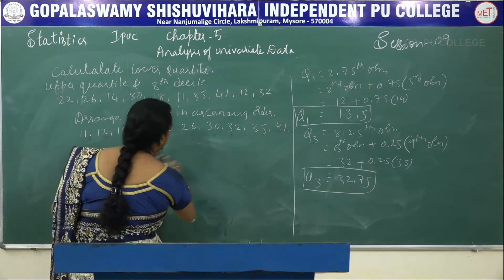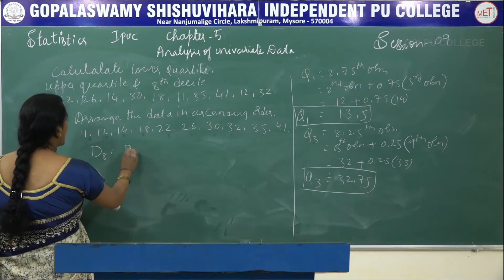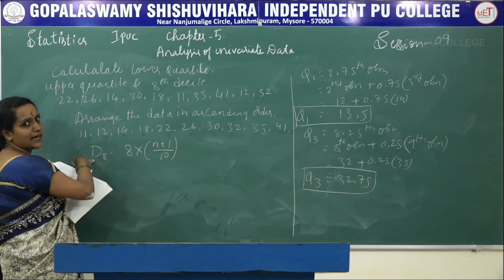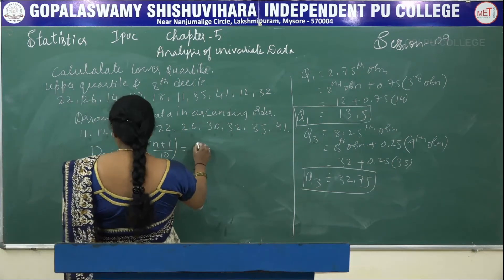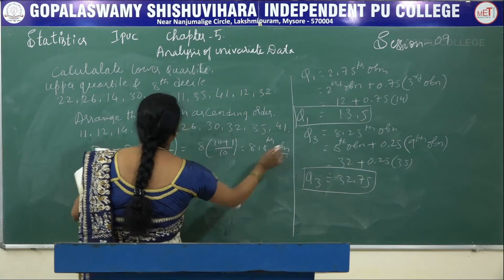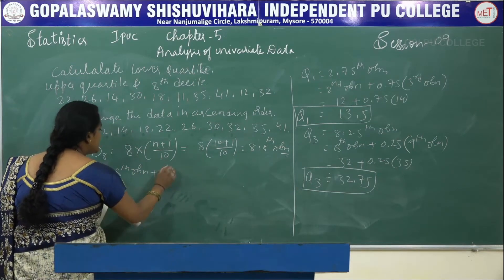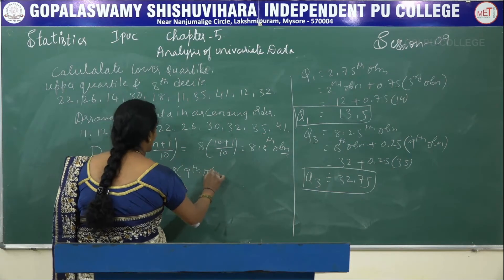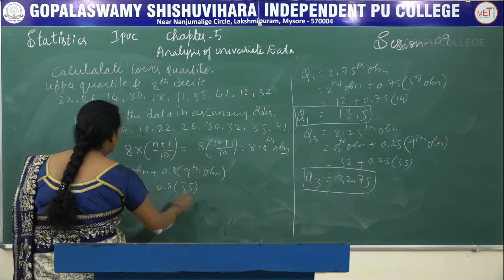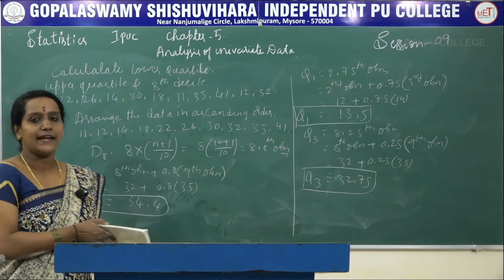Next we have to find D8, the 8th decile. D8 = 8×(n+1)/10 = 8×11/10 = 8.8th observation. D8 = 8th observation + 0.8 × (9th observation) = 32 + 0.8 × (35 − 32) = 34.4. This is our D8 value.